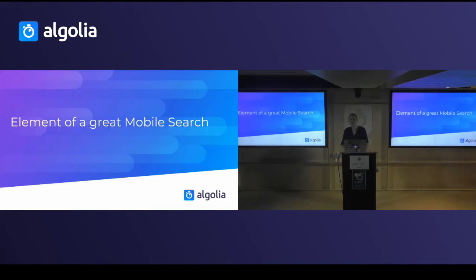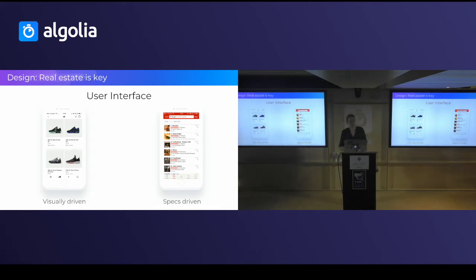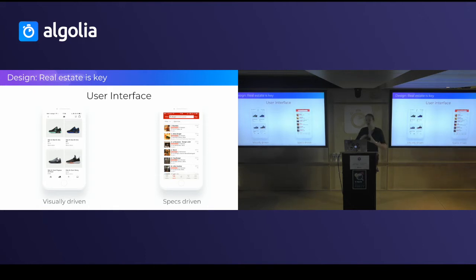Now let's see what makes a mobile search great. First, design — on mobile, space is limited so you need to use it wisely. You have two main options: a visually driven approach, which works well when users need to see the product before buying (like shoes), or a specs-driven approach, useful for something like a store locator where the user cares more about distance and rating than images.